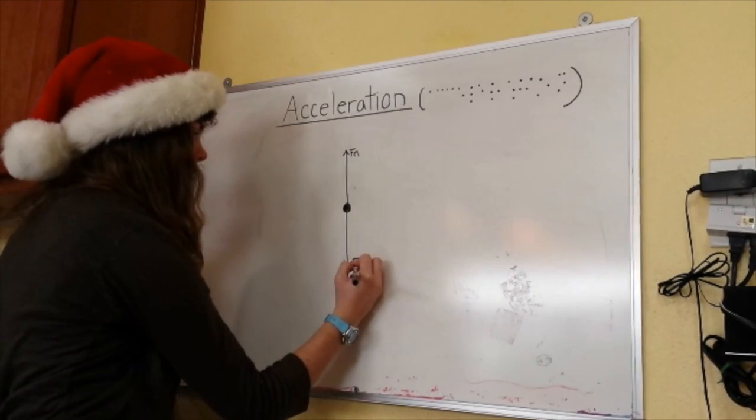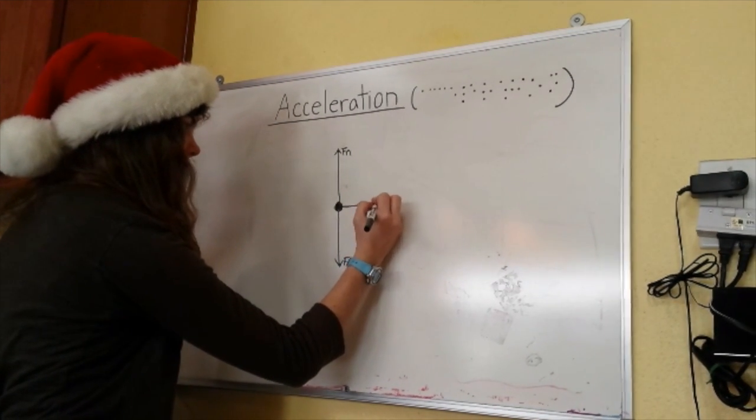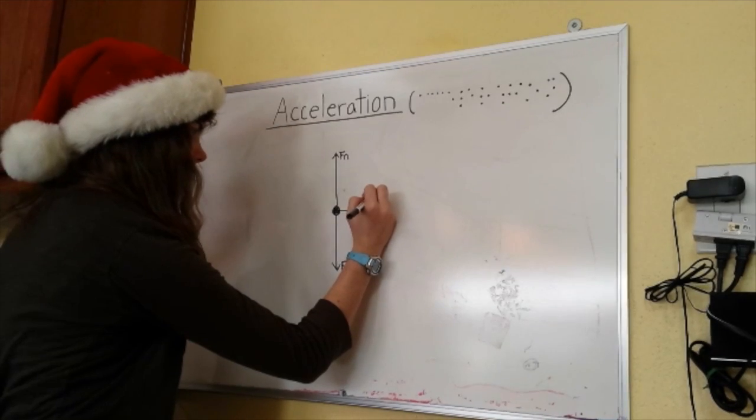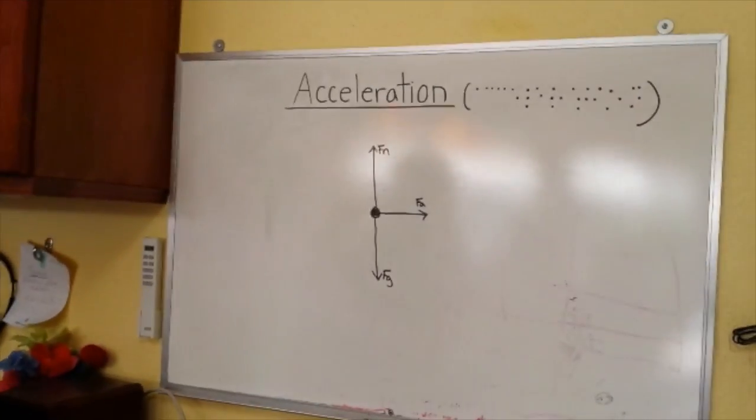Since there is no friction force opposing the applied force, the force is unbalanced. This means the object is accelerating. The forces are not balanced, so the net force is not zero.